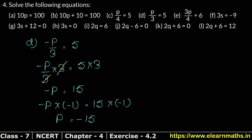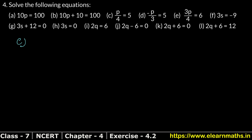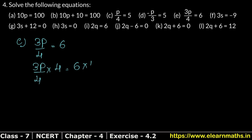Let's do Part E now. Part E is: 3p divided by 4 equals 6. The denominator is 4, so we multiply both sides by 4. We get 3p upon 4 multiplied by 4, and 6 also multiplied by 4. The 4s cancel, leaving 3p equals 24.